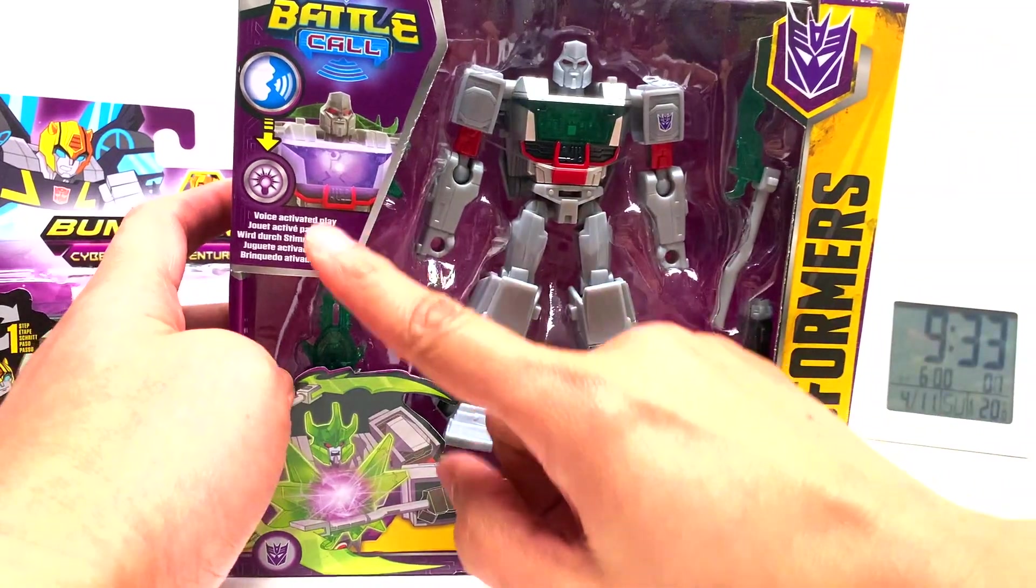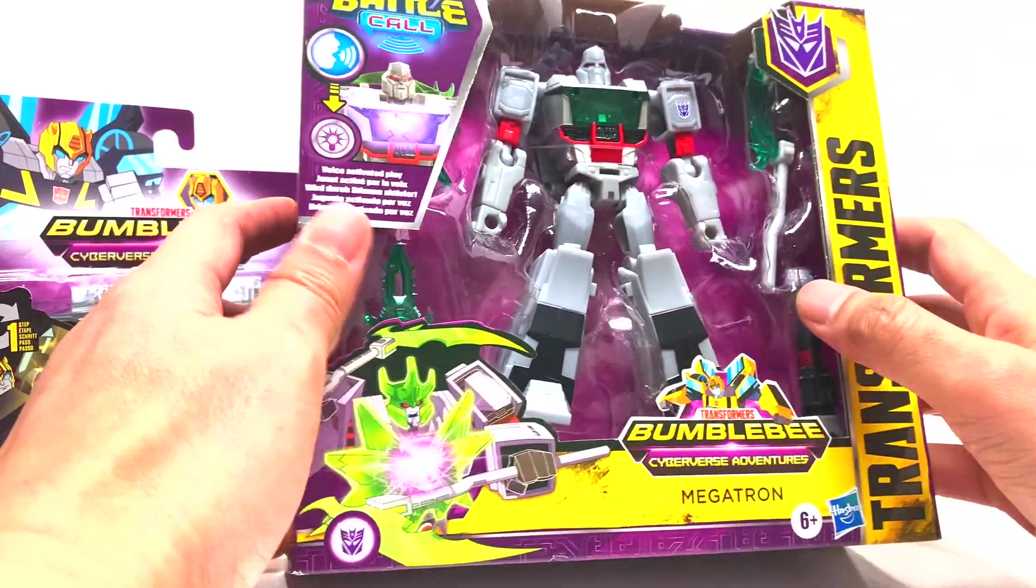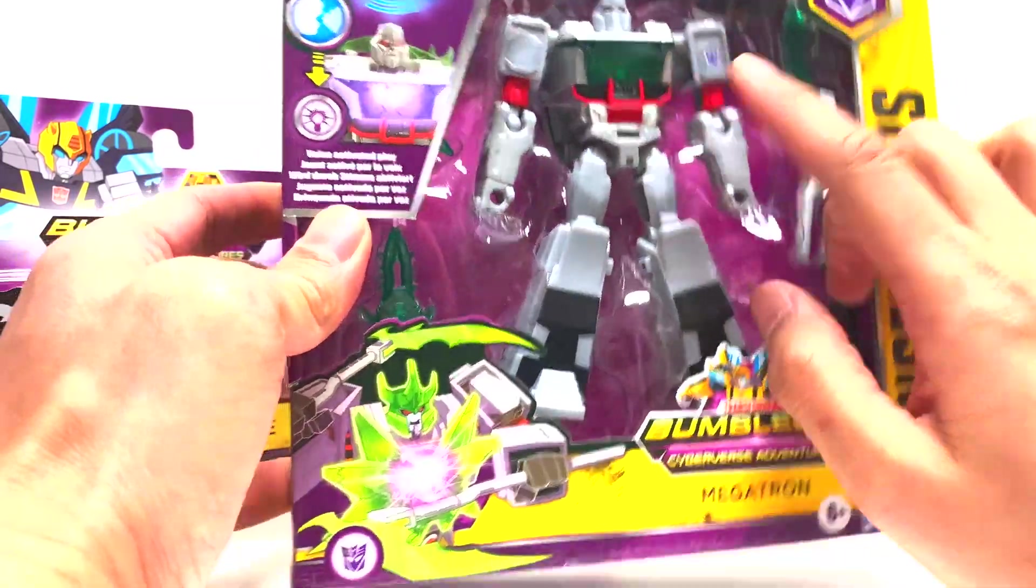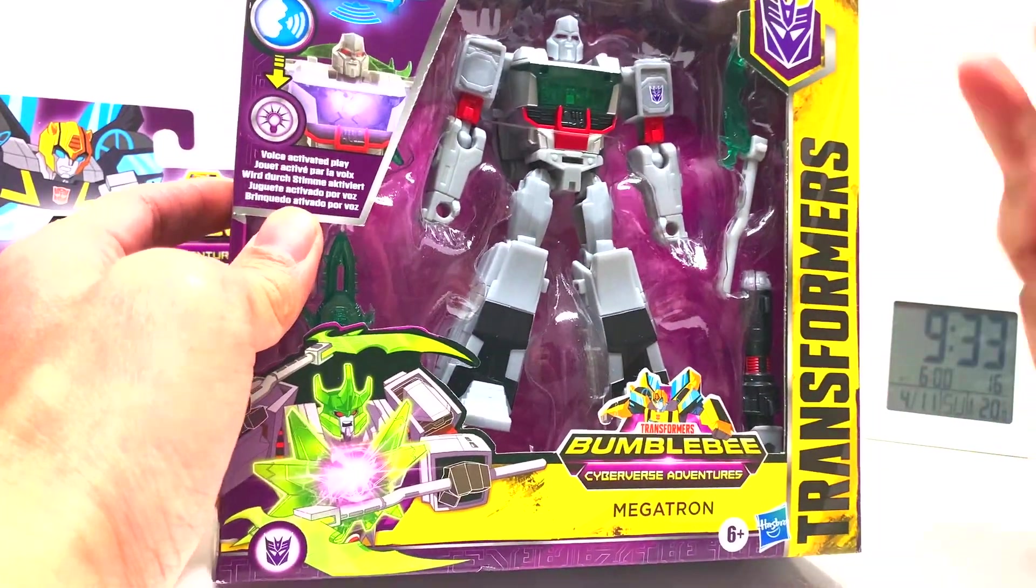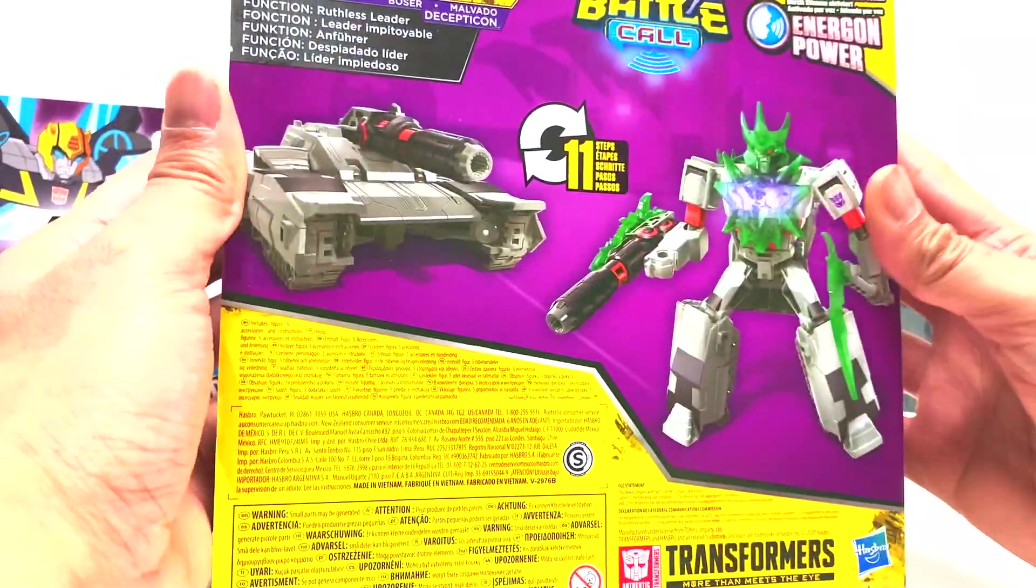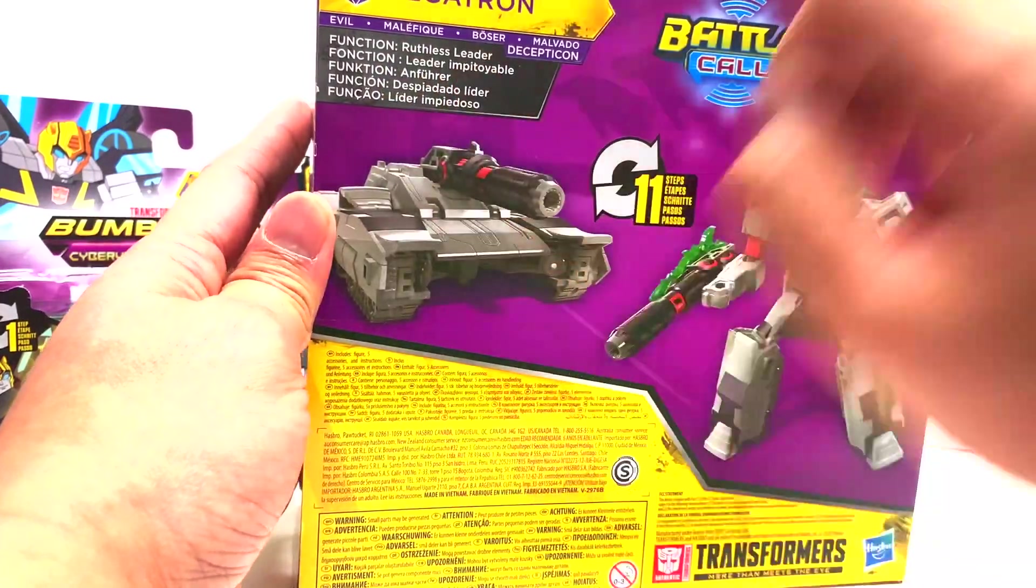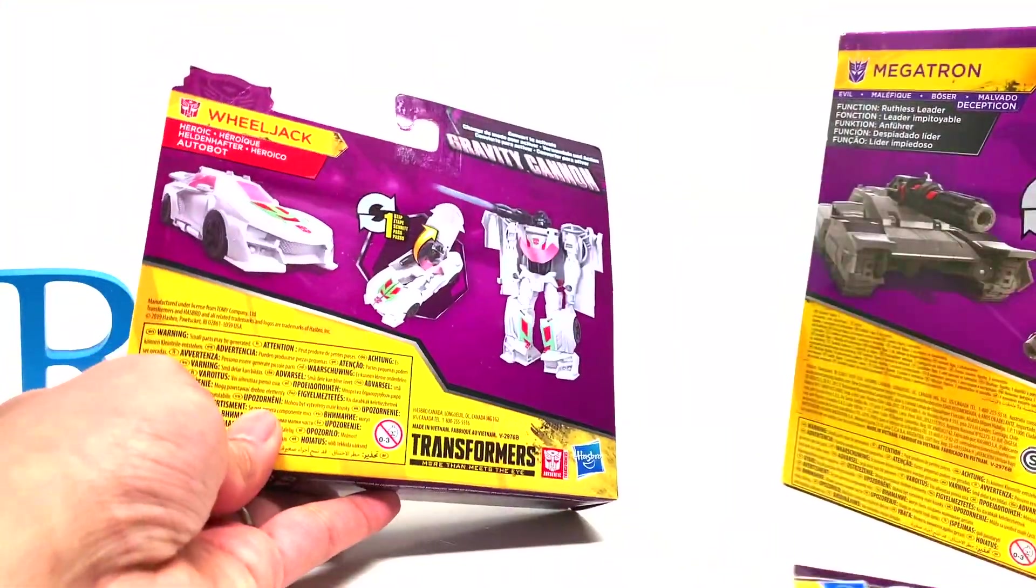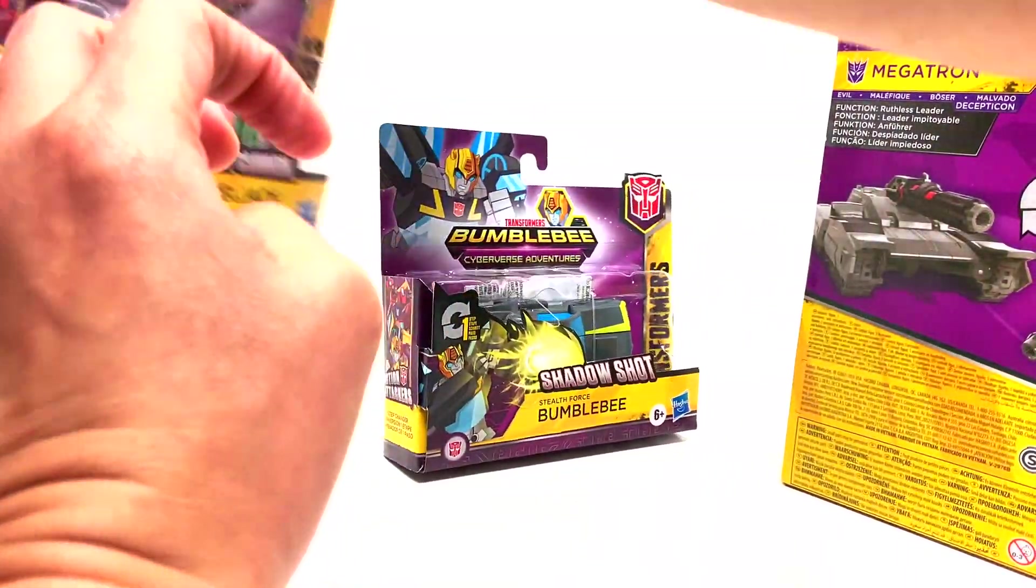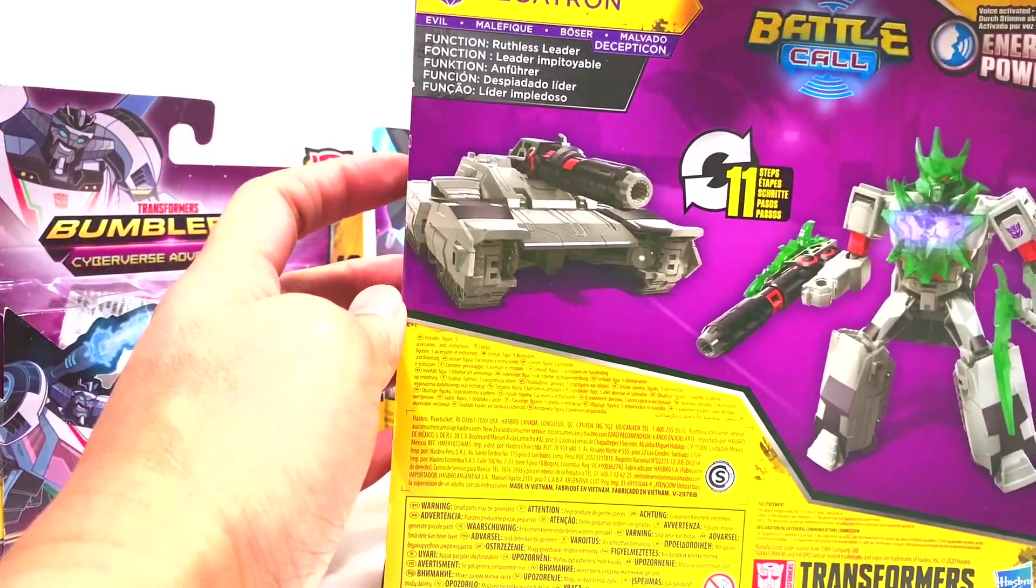Bumblebee comes with a stinger type of weapon thingy, and Wheel Jack comes with a shoulder cannon. Pretty cool. And last but not least, Megatron right here. He has Battle Call, he has voice activated features. You can see the electronics there. That's pretty cool. I mean that's really what makes this a little more expensive than usual. But man, look at those accessories! He's 11 steps.